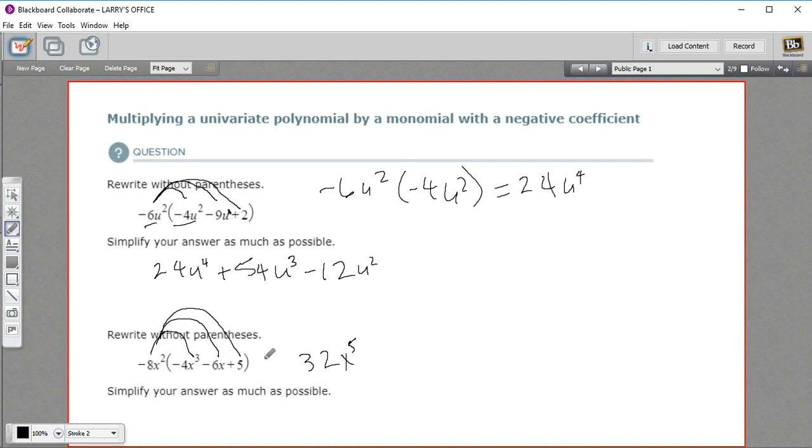Second term, negative 8 times a negative 6. That's a positive 48. And x squared times x. This is x to the 1st. So we add the exponents. We get x to the 3rd.